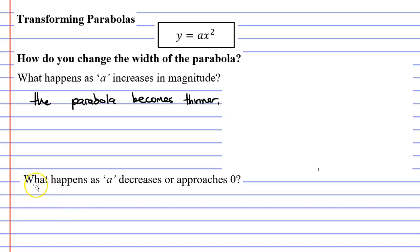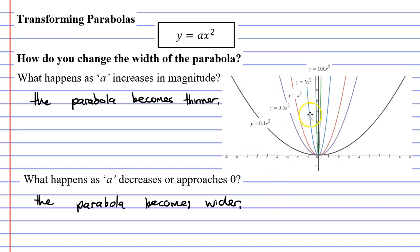So I'd like to make a little note down here. What happens as a decreases or approaches 0? And we'll say that the parabola becomes wider. And I have a picture here that we can see where when we have large numbers of a, we get really thin parabolas. And when we have really small numbers for a, we get our really wide parabolas.